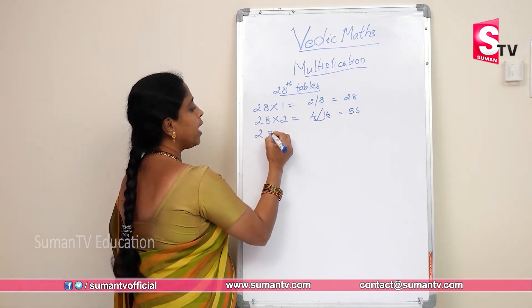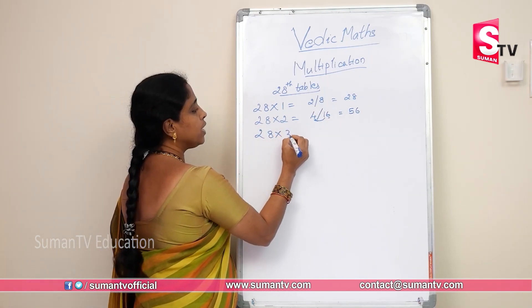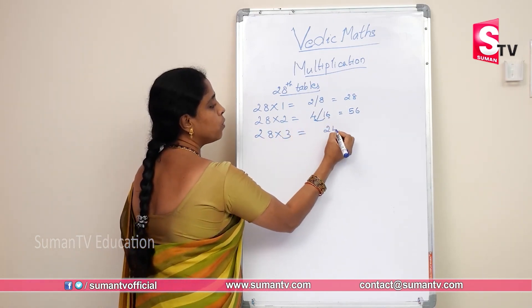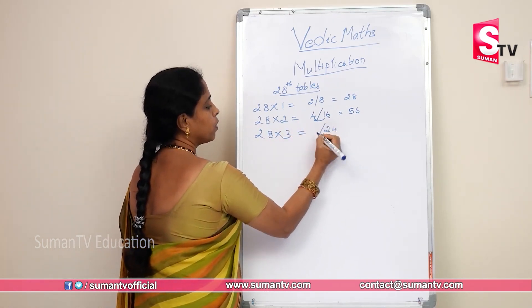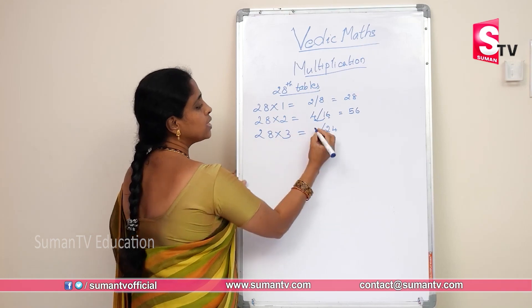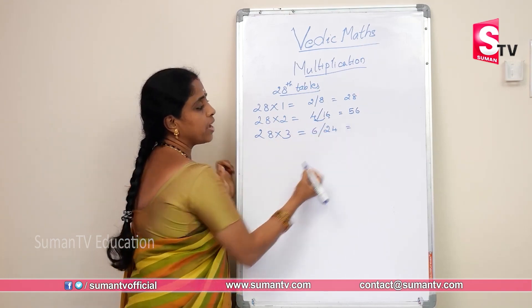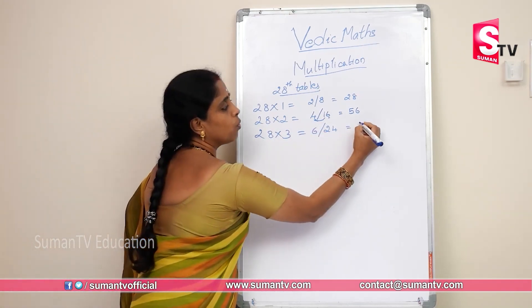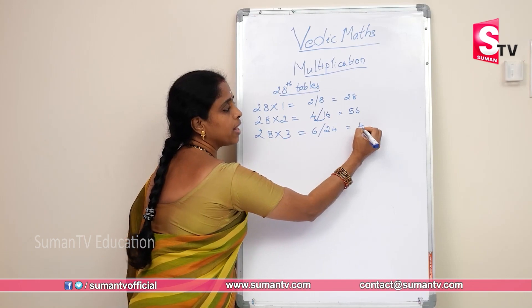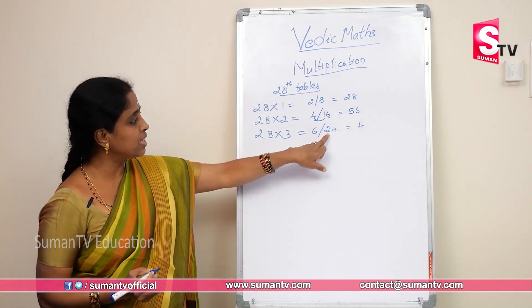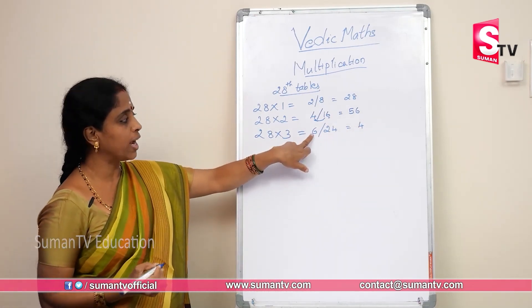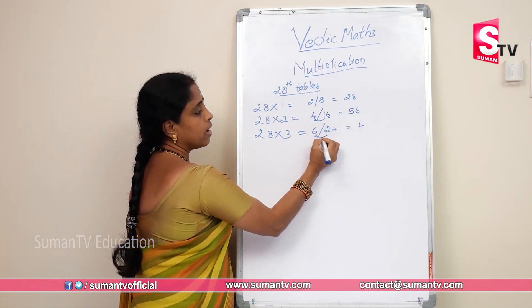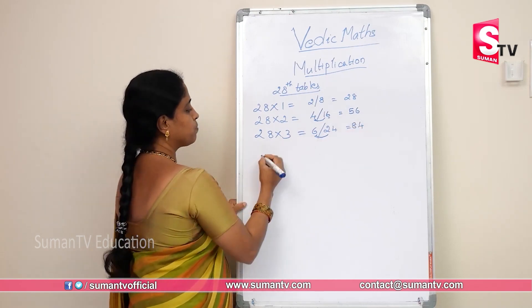Next, 28 into 3. 8×3 = 24. 3×2 = 6. We will test the Vedic method — carry the 2, and 6 plus 2 is 8. So 28 into 3 is 84.